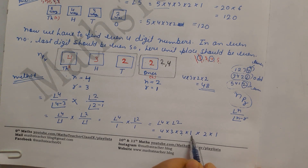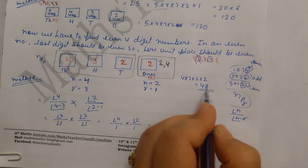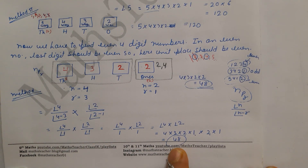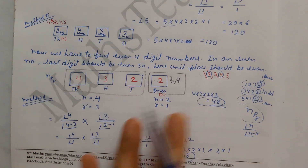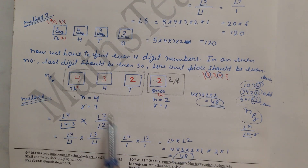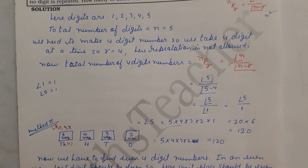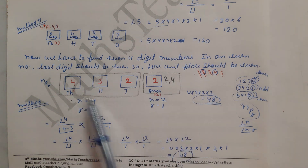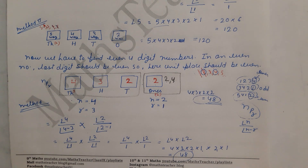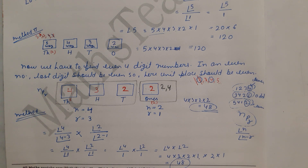So the answer is 48 even four-digit numbers, confirmed by both methods. We should practice these questions so that doubts become clear — the more you practice, the more easily you can answer questions. Now let's move to question number 5.